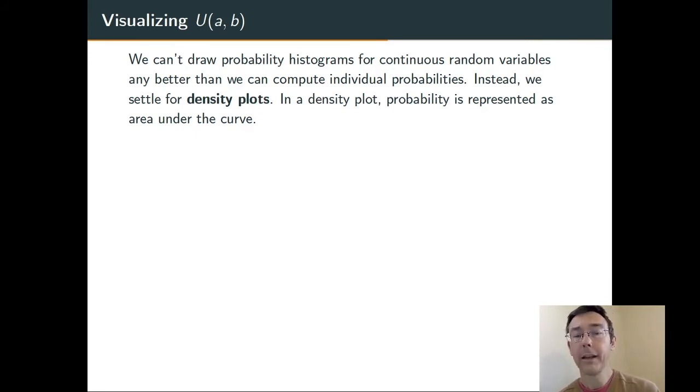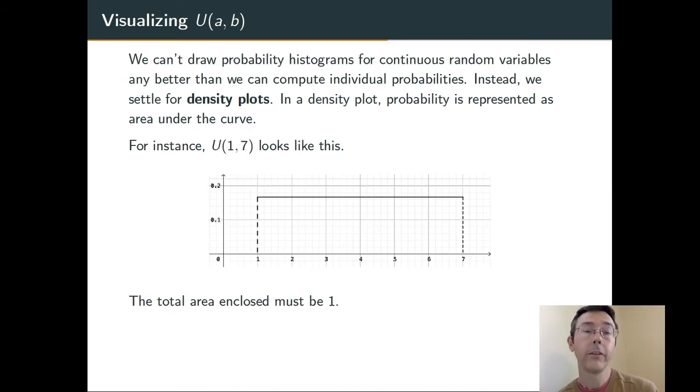So, we can't just draw probability histograms for continuous random variables any better than we could compute individual probabilities. Our workaround here is to draw what we call a density plot, and to represent probability not just as height of bars, but rather as area. Let's stick with the uniform distribution from 1 to 7. Here's the representation of that density plot. The total probability should be 1, so if we're representing probabilities as areas, the total area underneath any sort of density plot should be 1.